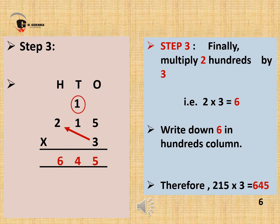In our final step, we will multiply 2 hundreds by 3. That is 2 multiplied by 3 equals 6. So write down 6 in the hundreds column. Therefore, 215 multiplied by 3 is equal to 645. When we multiply 215 by 3, we get our product, and that is 645.